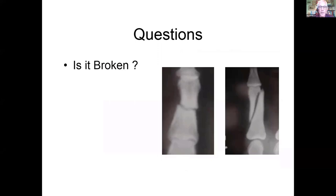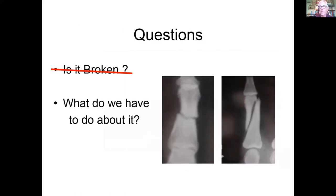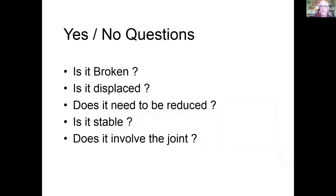Most patients think we take an x-ray of the bone to see whether it's broken or not. But I would put it to you that the question we as hand surgeons need answered isn't whether it's broken — that's often quite obvious — it's whether we have to do something about it. When I look at an x-ray, I'm going through a whole series of binary questions: Is it broken? Is it displaced? Does it need to be reduced? How am I going to do that? Is it stable once I've reduced it? Does it involve the joint?